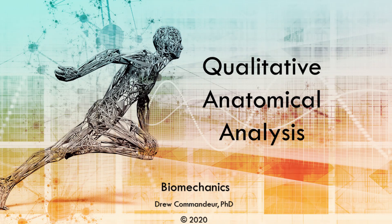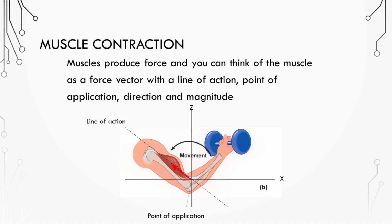In this lecture, we're going to discuss different types of muscle contractions, and we'll take a look at performing a qualitative anatomical analysis. Muscles produce force, and you can think of the muscles as a force vector with a line of action, point of application, direction, and magnitude.